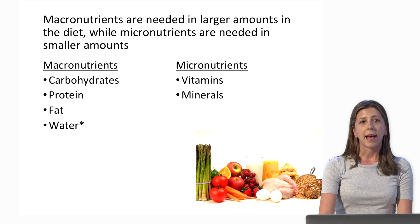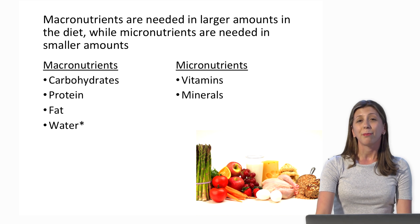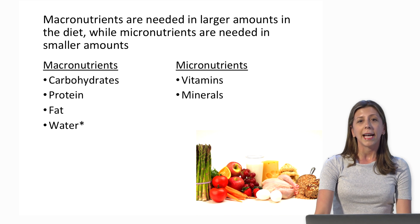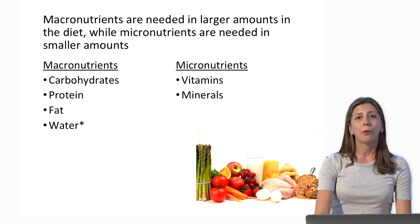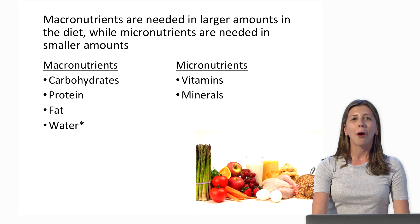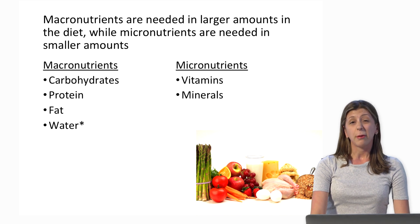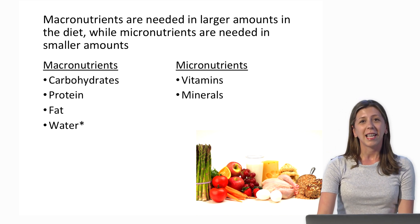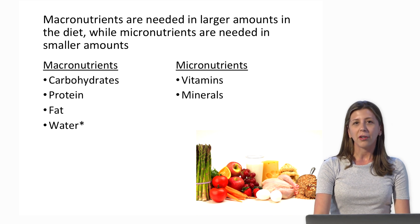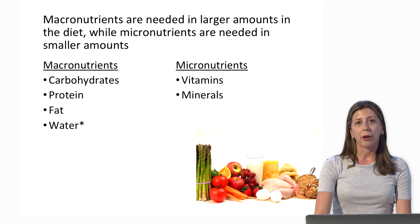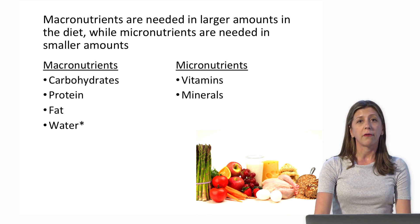Macronutrients — carbs, protein, and fat — are needed in larger amounts in the diet. Micronutrients including vitamins and minerals are needed in smaller quantities. Importantly, water is actually a macronutrient. Most people forget about water and overlook it, but without water you would die. Your body is able to draw on fat stores during starvation, but without water we would certainly not survive, which is why it falls under the category of macronutrients.